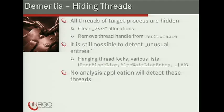Thread hiding is relatively easy with the methods implemented here. We delete the thread allocation and also remove the thread handle from the global PSP CID table — the global handle table for thread and process handles. Be aware there are still some thread-related artifacts not hidden, such as locks or wait/block list memberships. However, every memory analysis application tested completely fails to detect the deleted thread when the allocation is deleted, especially when the handle is also removed from the PSP CID table.